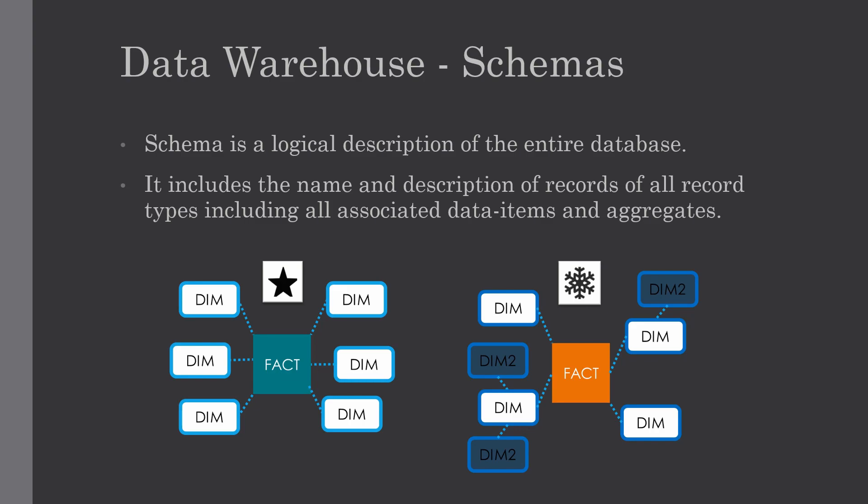A schema is nothing but a logical description of an entire database. It includes the name and description of records of all record types, including all associated data items and aggregations. Much like a database, a data warehouse also requires a schema. While a database uses the relational model, a data warehouse uses star, snowflake, and fact constellation schemas.